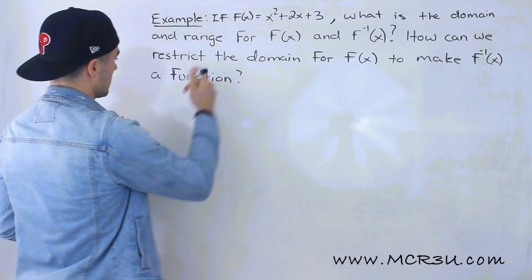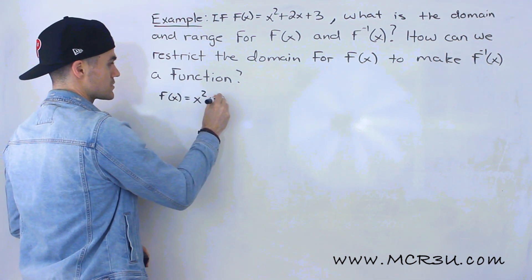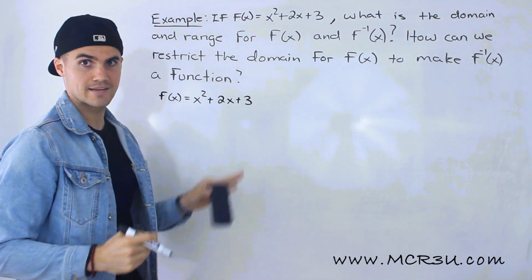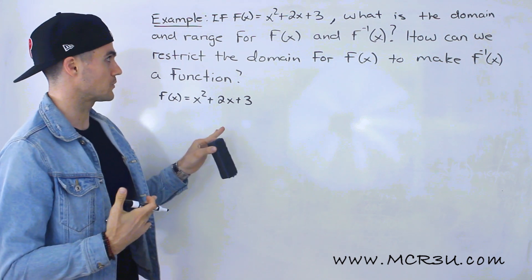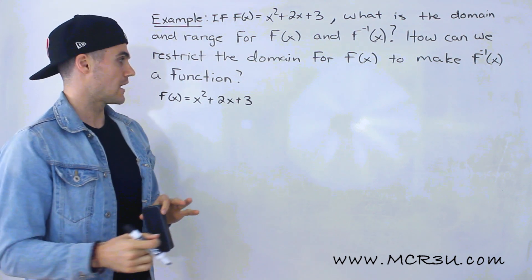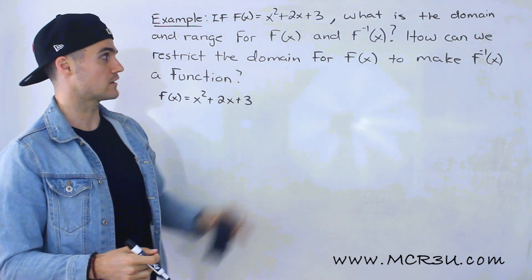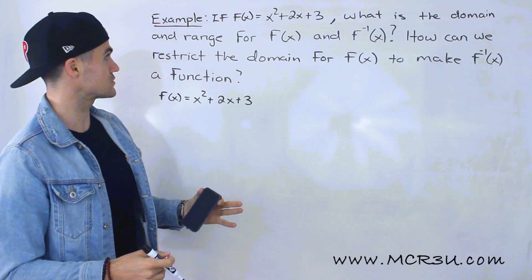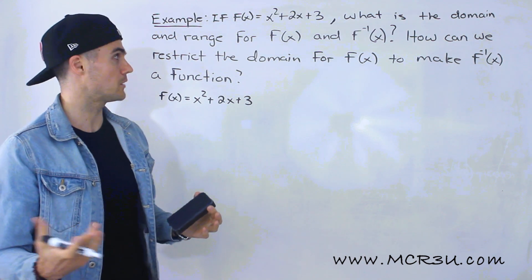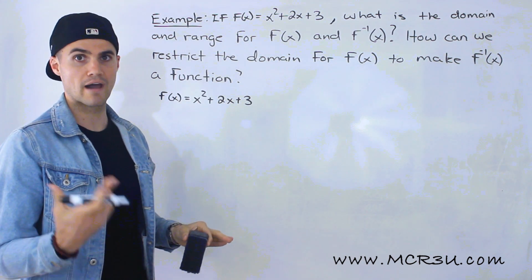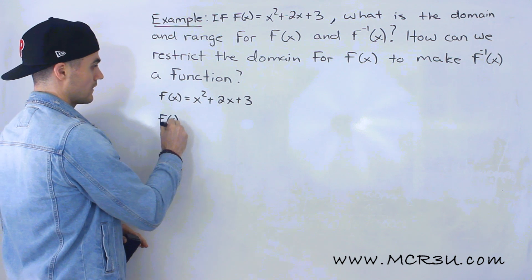We're dealing with a parabola x² + 2x + 3, which is in standard form. The first thing I like to do with a parabola is find the vertex, because graphing it is easier, and figuring out the domain and range is easier. The domain for a parabola is always x ∈ ℝ, but the range depends on where the vertex is. So I'm going to complete the square.